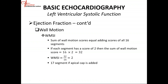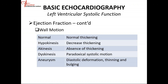We use a 17-segment model if you're going to include the apical cap — the apical cap is separate. This is the classic definition for the different wall motion abnormalities. When we say normal wall motion, it thickens with contraction. If it's hypokinetic, there is decreased thickening with contraction. Akinesis is the absence of thickening with contraction. And dyskinesis is a paradoxical motion — it moves in the opposite direction to which it's supposed to move. We stop using an aneurysmal segment.